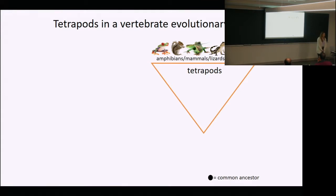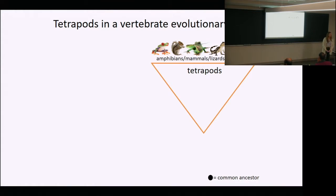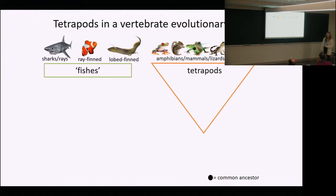Tetrapods are all animals that have limbs with hands and feet, fingers and toes. Today this includes amphibians, mammals, lizards, crocodiles, and birds. It also includes animals that don't have limbs with fingers and toes — such as snakes — but snakes had ancestors that did. This is a major group of vertebrates. There are also other groups: the fishes, including cartilaginous fishes like sharks and rays, and bony fishes. The ray-finned fishes are what you'd eat on your dinner plate or see scuba diving.